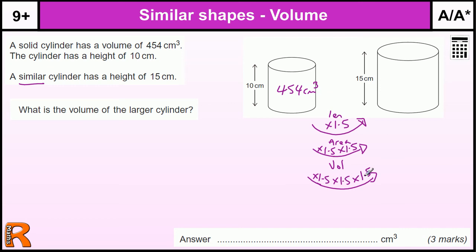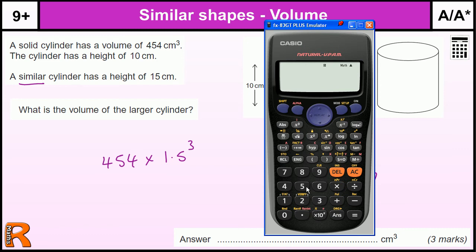So we are multiplying by 1.5 cubed. So all we need to do is take our 454 and times by 1.5 cubed. Use the calculator. 454 times 1.5 cubed. And that gives us 1532.25.